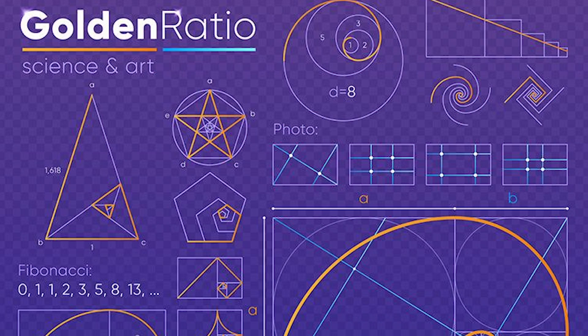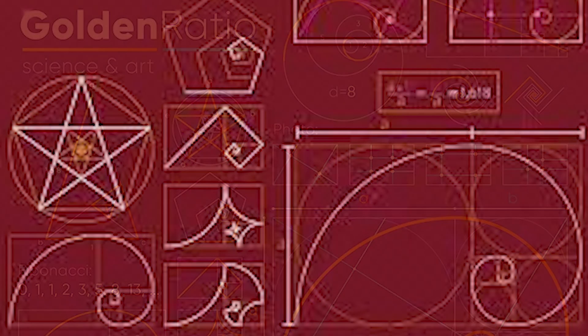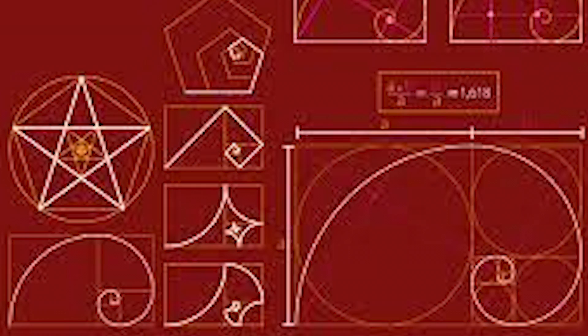Even today, scientists and aestheticians use these mathematical formulas to determine why we think something is beautiful and why it's not. Obviously, the golden ratio doesn't work for everyone. Everyone that you know, everyone that I know, has a different face. That's how we can tell them apart.